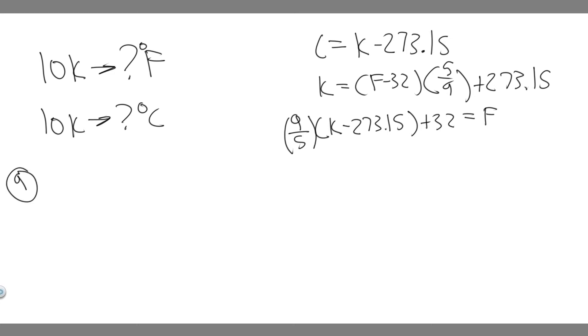So starting with part A, which is going to be converting into Fahrenheit, let's just go ahead and plug in the K value in this formula. So we have 9 over 5, we're going to multiply it by 10 minus 273.15 and then add 32.